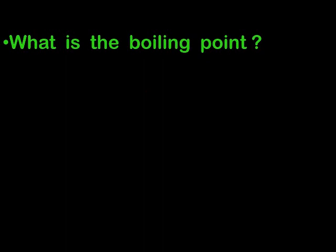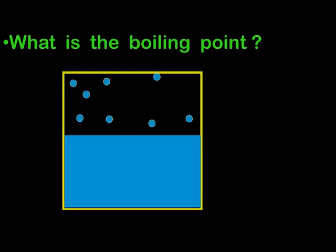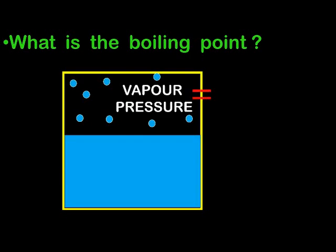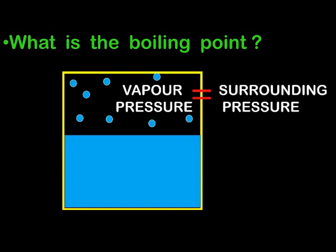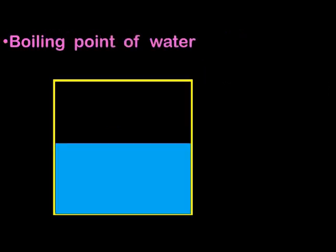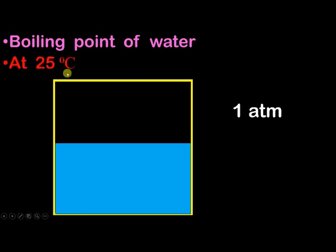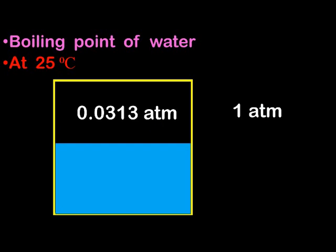Boiling point is the temperature at which the vapor pressure becomes equal to the surrounding pressure. To understand this, let us consider the boiling point of water. We assume surrounding pressure is one atmospheric pressure — the pressure we experience in daily life. At 25°C (room temperature), the vapor pressure of water is 0.0313 atmospheric pressure, which is less than the surrounding pressure.